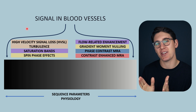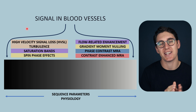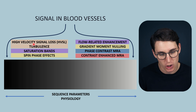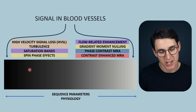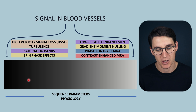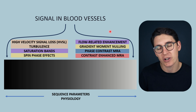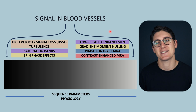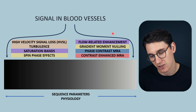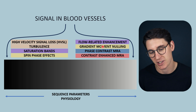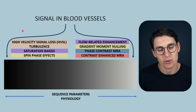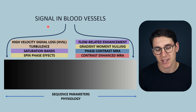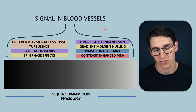Hello everybody and welcome back. We're making our way through a series of talks looking at signal within blood vessels. So far we've seen that high velocity signal loss and turbulence can lead to dark blood vessels, hypo-intensity on our image. We then looked at flow-related enhancement and time-of-flight MRI angiography images, as well as saturation bands to prevent blood from one direction showing signal within those images.